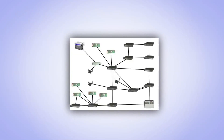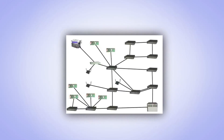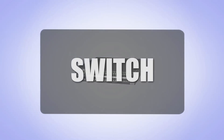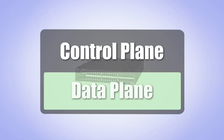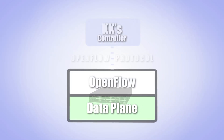OpenFlow is a protocol for managing how packets are controlled in switches and routers. It works by standardizing the interface between control and data planes, and then by moving the control plane off-box into a centralized service called the OpenFlow controller.